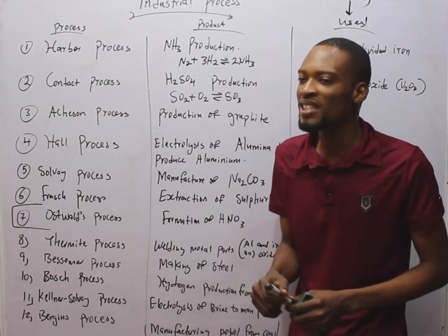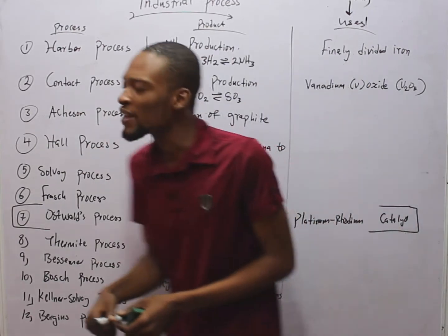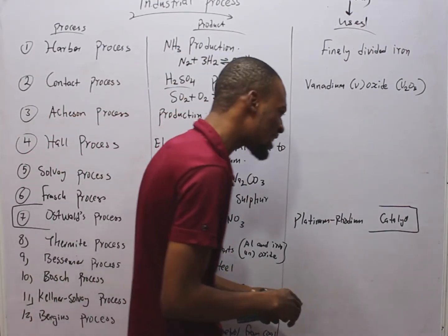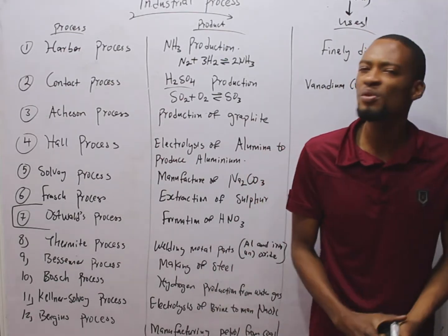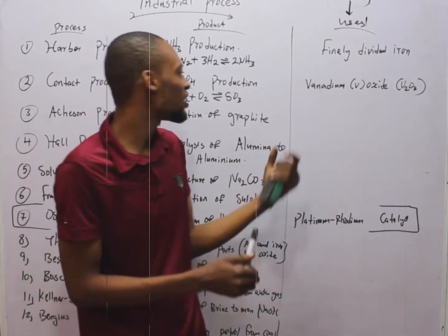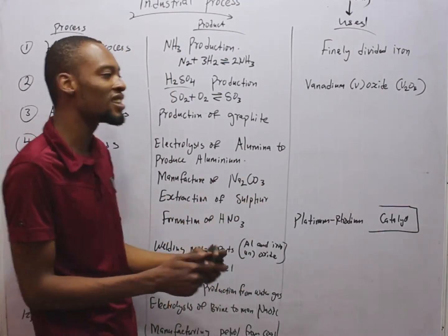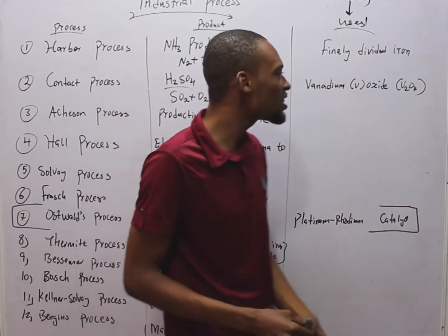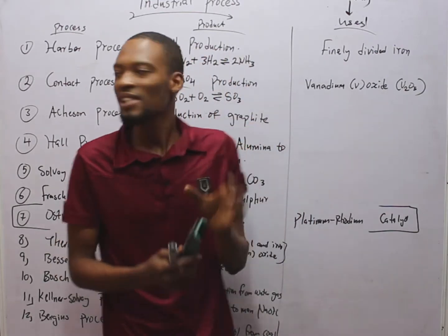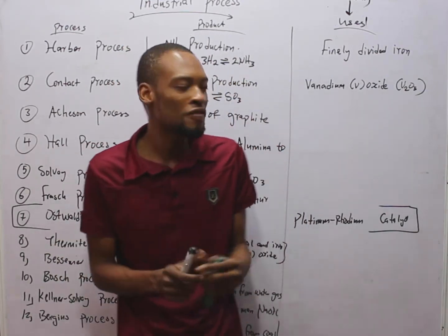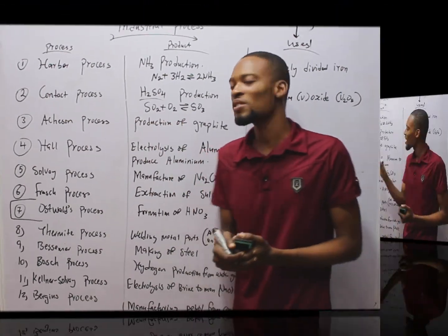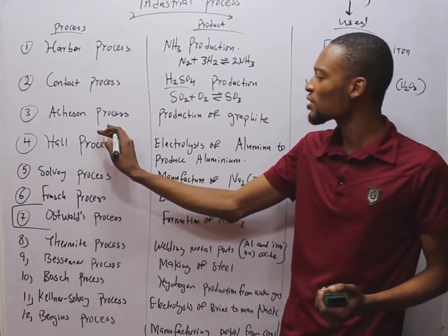The Contact process is used in the manufacture of H₂SO₄ (sulfuric acid). H₂SO₄ is very important in the industry because it is used to manufacture a whole lot of stuff — it has wide application in industry. The catalyst used in the Contact process is vanadium(V) oxide, V₂O₅.